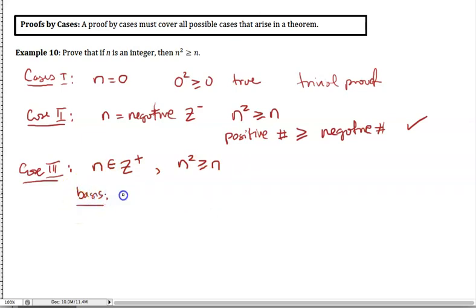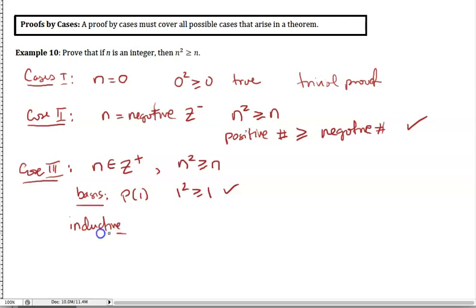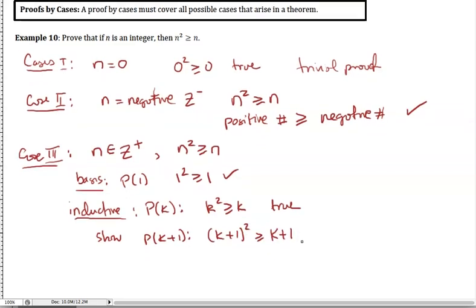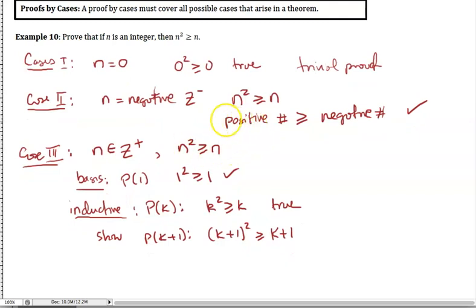Basis: we use n = 1, since n = 0 was covered in Case 1. For n = 1: 1² ≥ 1, which works. Now the inductive step: assume P(k) — that k² ≥ k — is true, and we want to show P(k+1): that (k+1)² ≥ k+1.